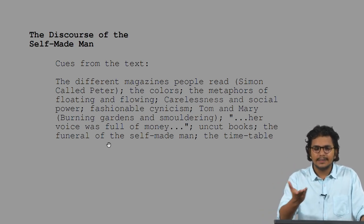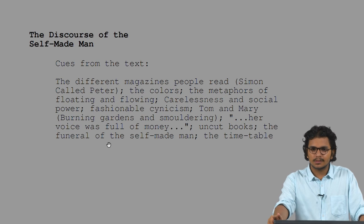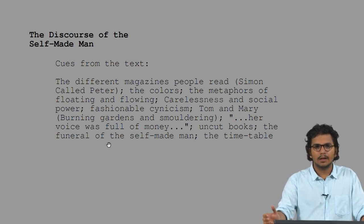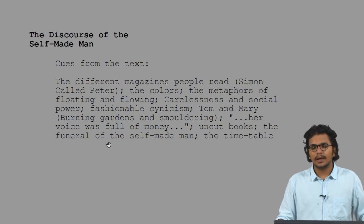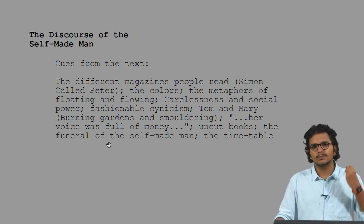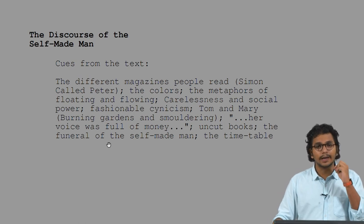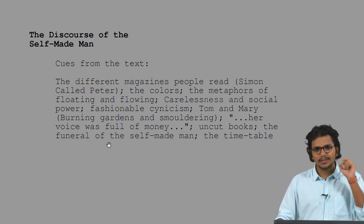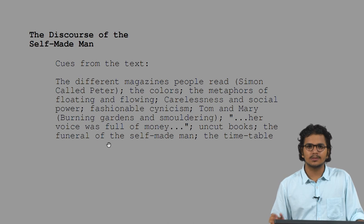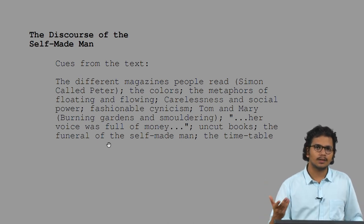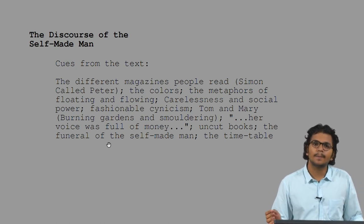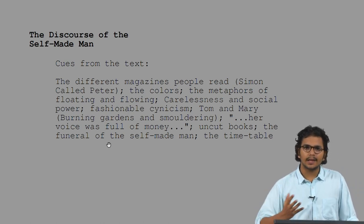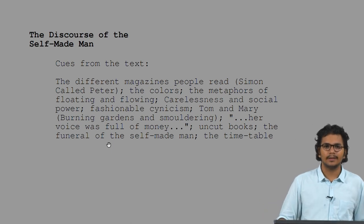We see that Gatsby is practicing elocution so that his voice and his words come across as very refined. Nick observes Gatsby trying to pick his words when he speaks. These ideas are also very much suggestive of how the discourse of the self-made man is discussed and also critiqued in The Great Gatsby.